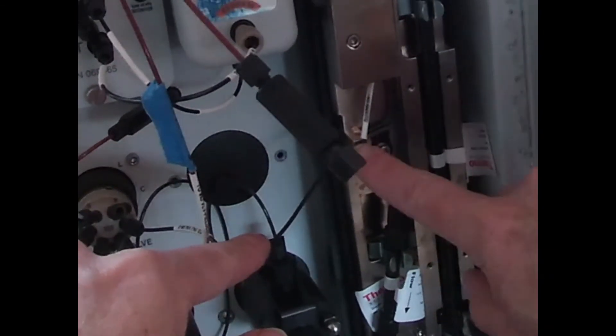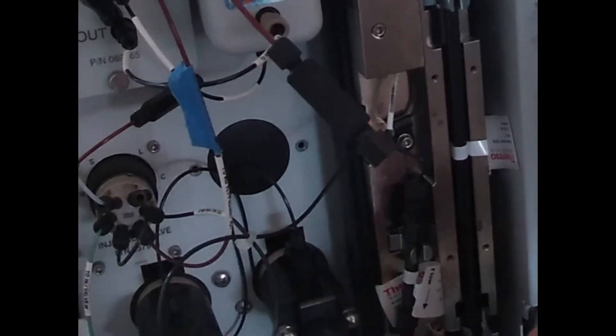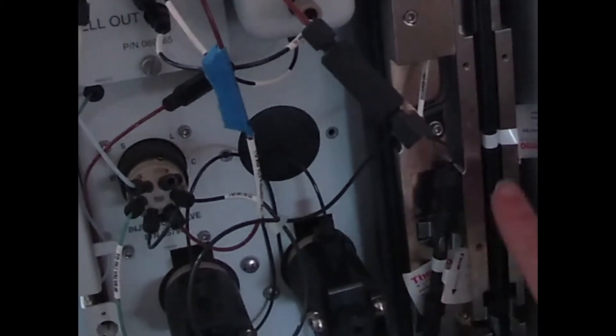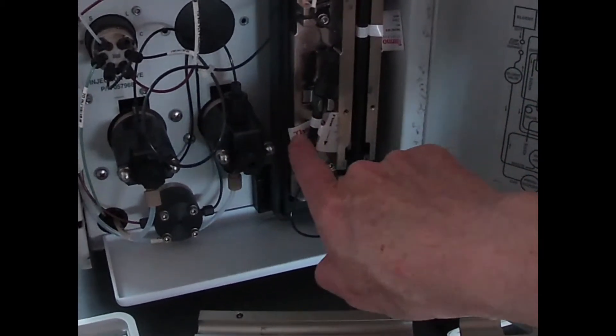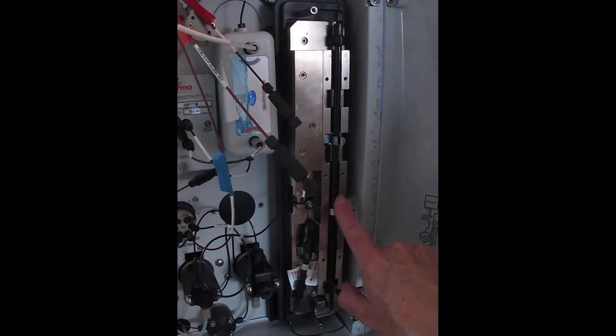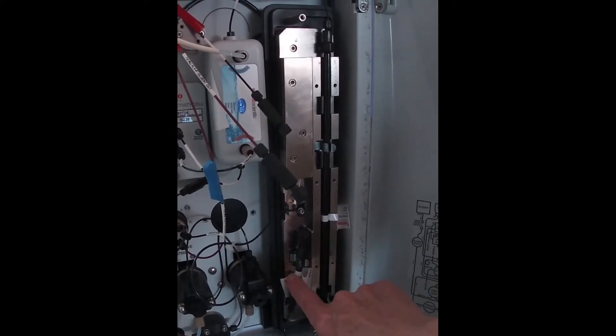So our solution first runs here and actually passes through a guard column. The guard column is made of the same material. In this case, we're doing anion chromatography, so we have a guard column that's basically there to protect our analytical column from anything that might irreversibly stick.